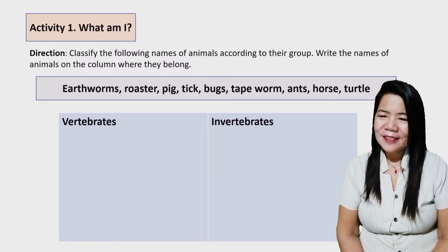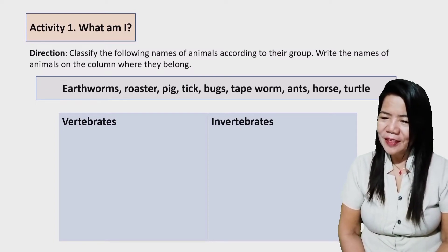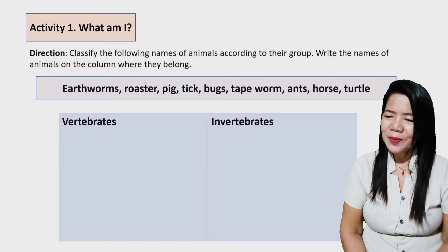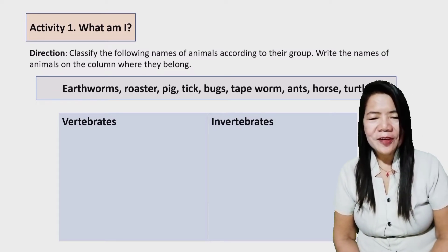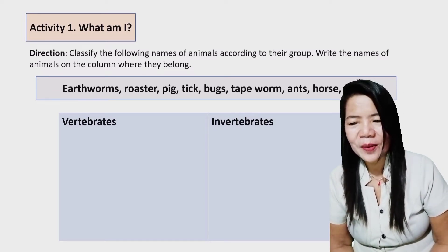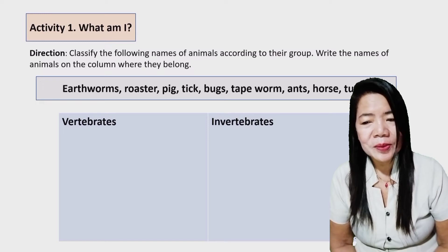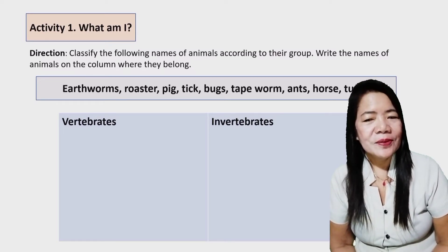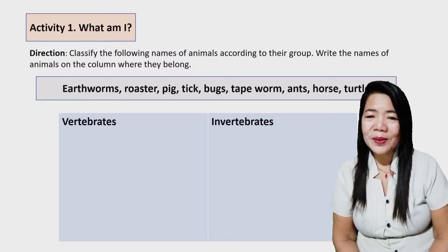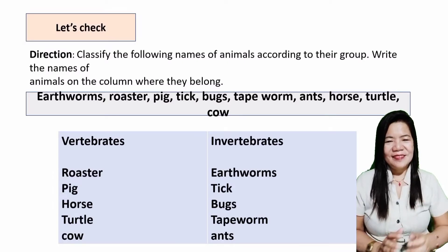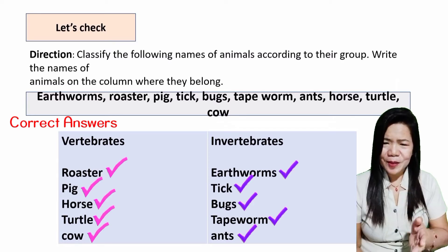Okay, class. To have more understanding about vertebrates and invertebrates, let us do Activity 1: What am I? Direction: Classify the following names of animals according to their group. Write the name of the animals in the column where they belong. You have 10 seconds to answer. Okay, let us check your answer. Good job!